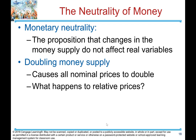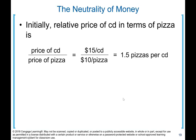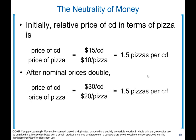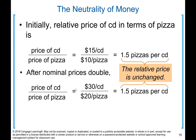Monetary neutrality is the proposition that changes in the money supply do not affect real variables. Doubling the money supply causes all nominal variables to double. For example, the relative price of CD in terms of pizza is initially $15 per CD divided by $10 per pizza, which is 1.5 pizzas per CD. After doubling all prices to $30 per CD and $20 per pizza, the relative price is still 1.5. Doubling nominal variables does not affect real variables.